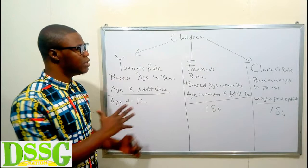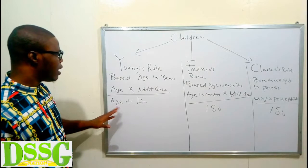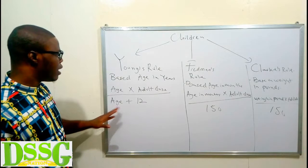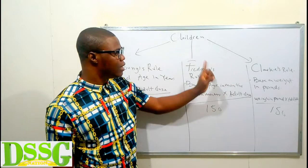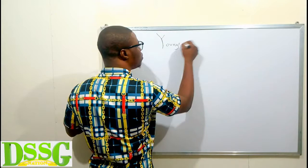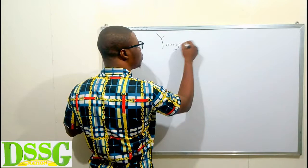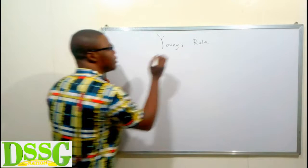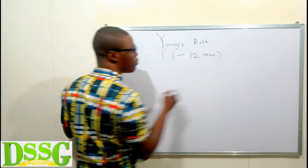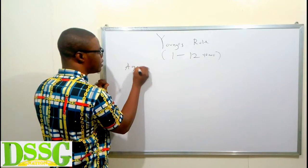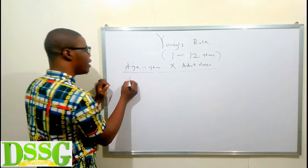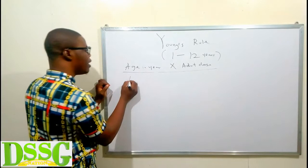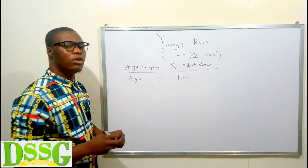Those are the formulas for each calculation. Let's pick an example and calculate the dosage using Young's Rule, Fried's Rule, and Clark's Rule. Starting with Young's Rule: we said Young's Rule is used for ages 1 to 12 years, and the formula is age in years multiplied by adult dose, all over age in years plus 12.